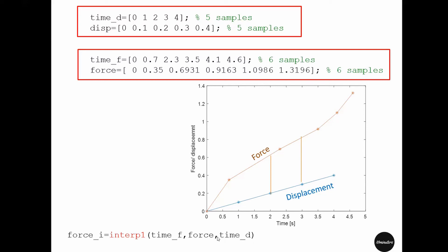As this time stamp for displacement has only five samples, after this interpolation this interpolated force, or force_i, will also have only five samples sampled at this time_d.